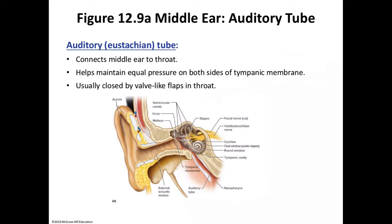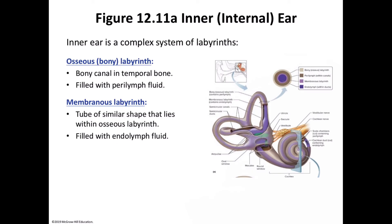The Eustachian tube is usually closed with valve flaps in the throat, which inhibit air movements into the middle ear. Yawning, swallowing, and chewing help open the flaps to hasten equalization of pressure. Signs of otitis media (middle ear infection) in a toddler include irritability, fever, and tugging on the painful ear. Using an otoscope can reveal a red, bulging tympanic membrane.